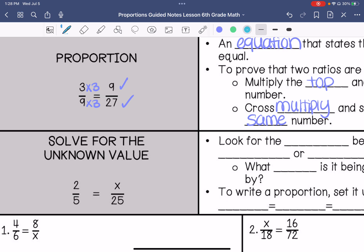Or you can do 9 times 9 is 81. 3 times 27, I don't know that off the top of my head. That's 81, so yes, they are equivalent. They create a proportion.